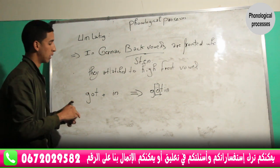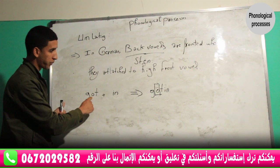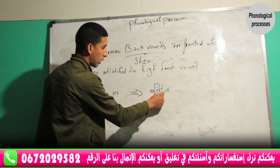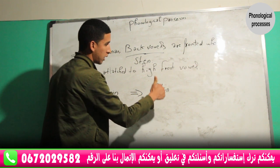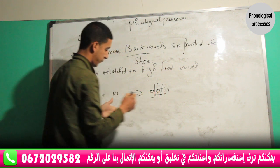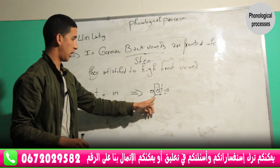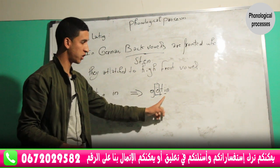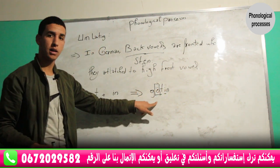The rule is simple: the back vowel of the stem becomes fronted when it is attached to a suffix which is a high front vowel. When the word is attached to a suffix which is a high front vowel, the back vowels of the stem will be fronted.